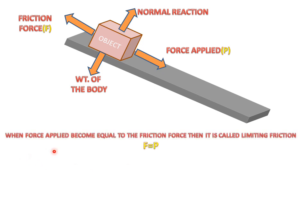When force applied becomes equal to the friction force then it is called limiting friction. When we apply force on the object and we apply increasing this force, now at a time this force will be equal to the friction force. This point is called limiting friction where friction force will be equal to the applied force.